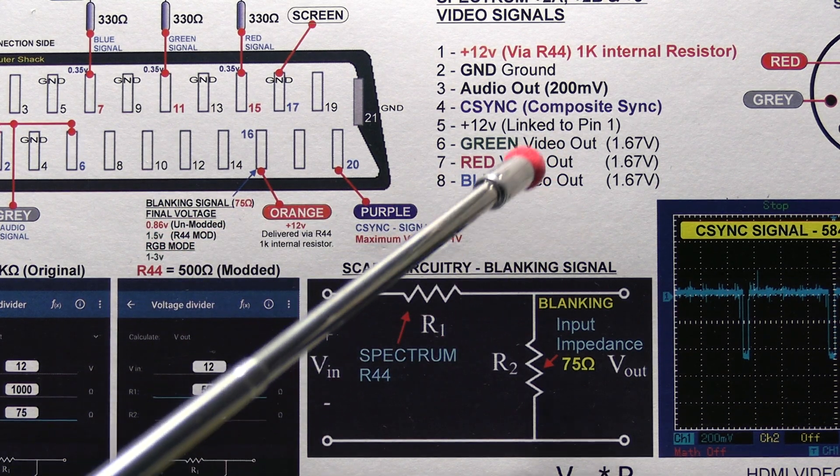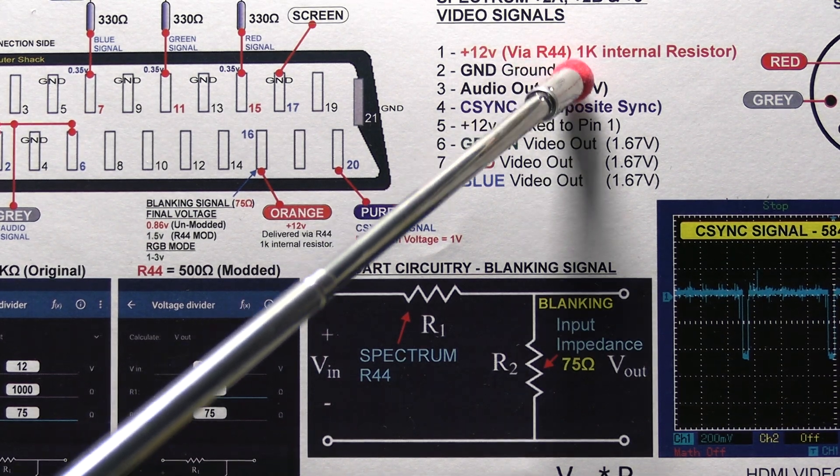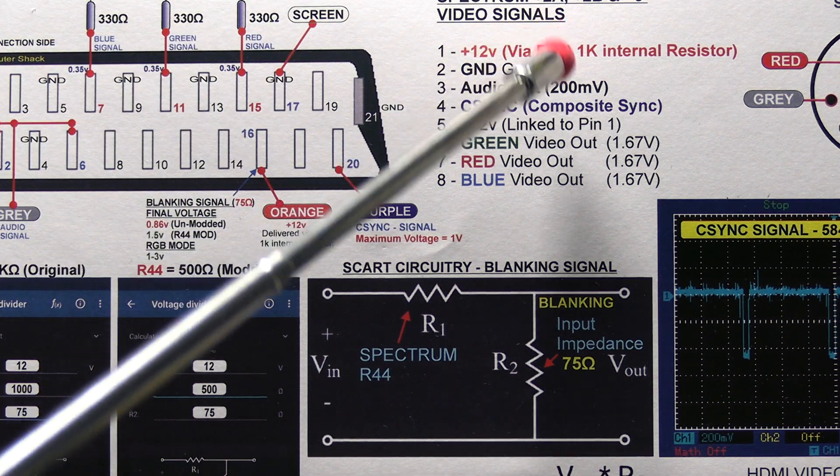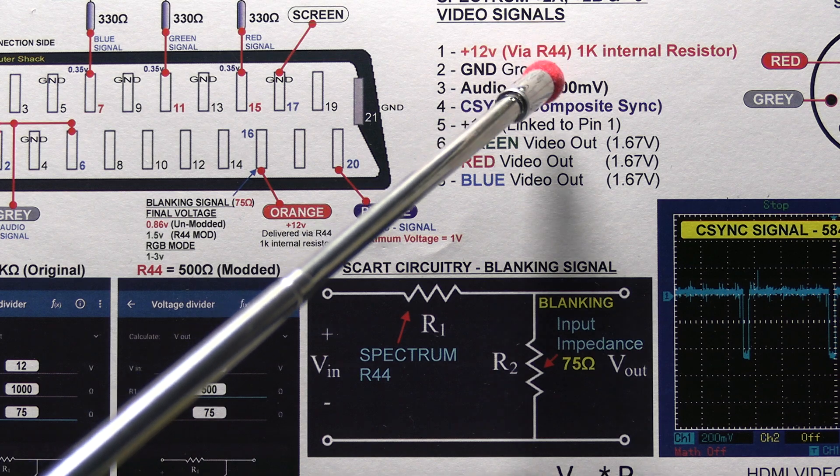This is because the 12 volts is fed by a serial resistor, R44, which is 1k. For those who know electronics, a resistor in series doesn't drop voltage, but it does limit current.